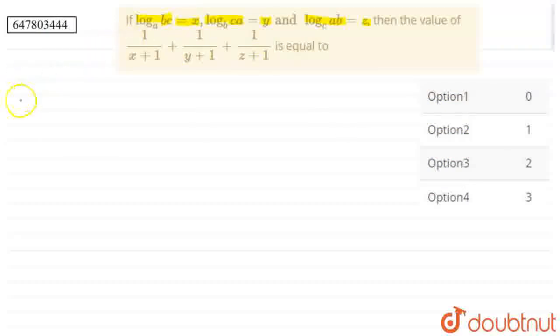So, we will solve it. First, we will write the value of x. We will write the value of x as log b,c upon log a. You know that log property: log base m of n is equal to log m upon log n.